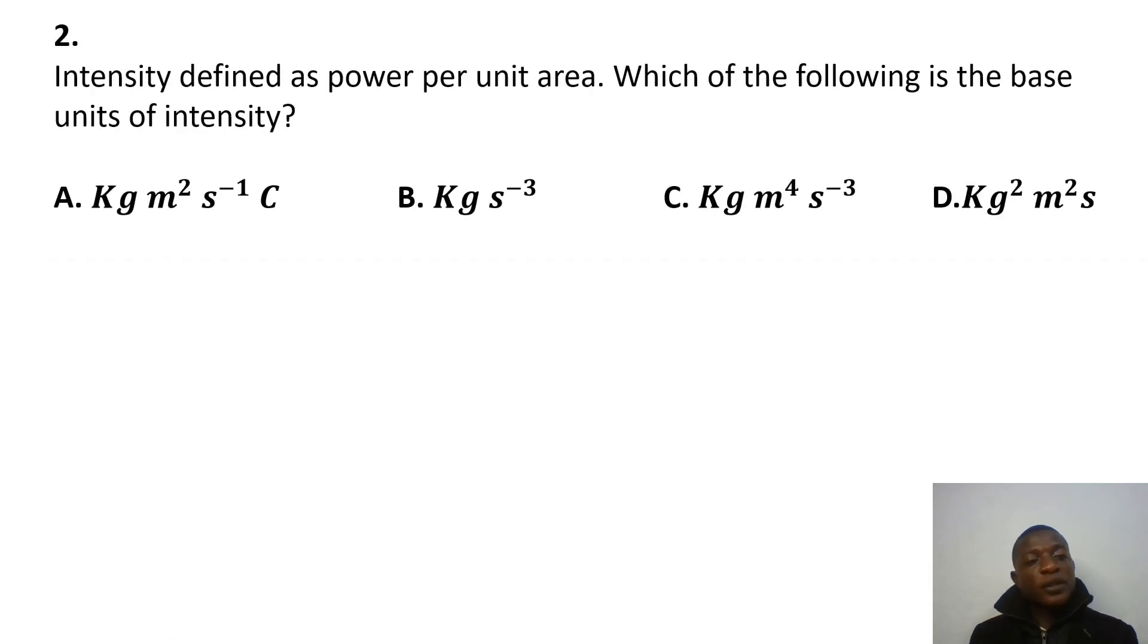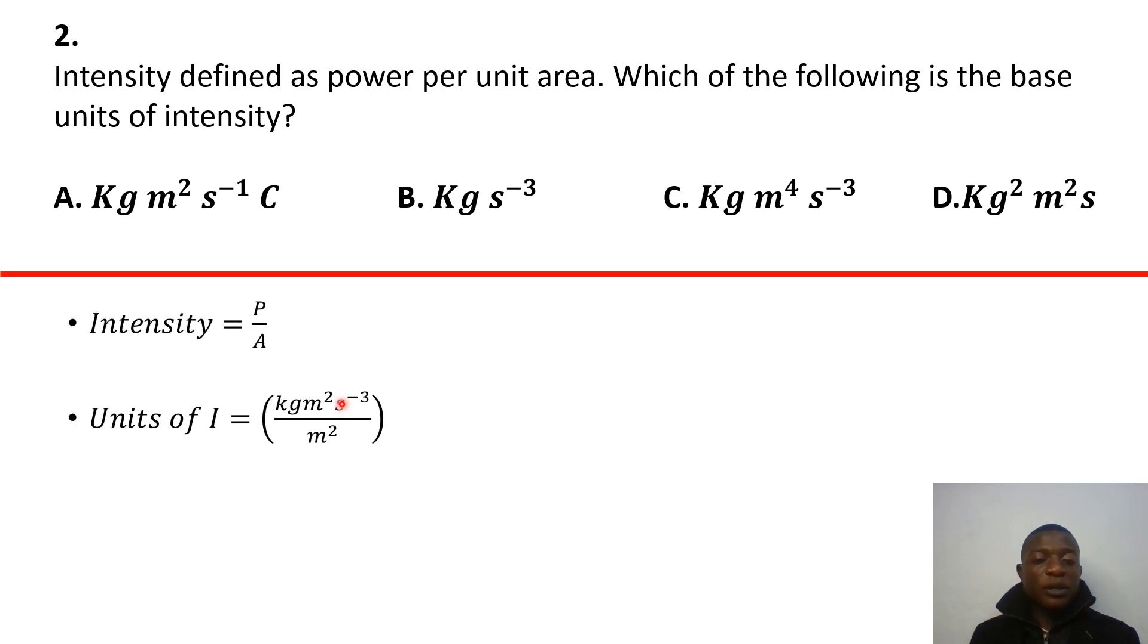So the next question says intensity defined as power per unit area, which of the following is the base units of intensity? This is very easy, right? So if intensity is actually power per unit area, and then it's clear that power is kg m squared per second cubed divided by area, which is m squared, and you have the unit of intensity to be kg per second cube. Easy peasy, lemon squeezy. And so our answer there is actually B.